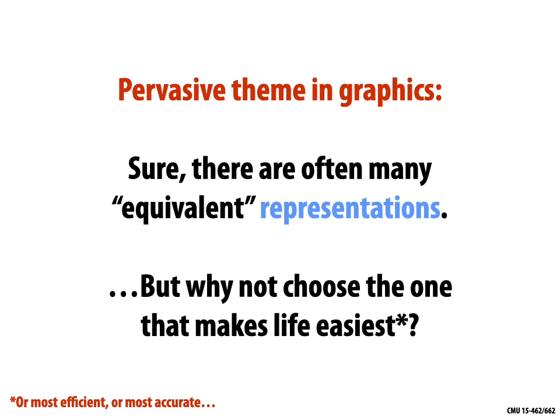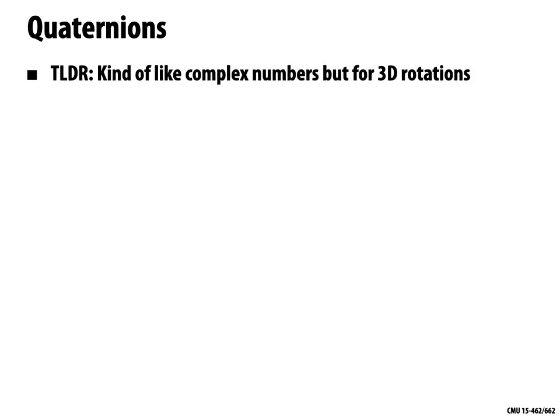There may be other situations where matrices are more useful than complex numbers — the point is to identify at any given moment which representation should you use. Which representation is going to help you simplify and solve the problem at hand? Let's talk now about how to take this idea of complex representations and go up a dimension to talk about three-dimensional rotations. Quaternions are a very interesting object — the short story is they're kind of like complex numbers, but for 3D rotations.